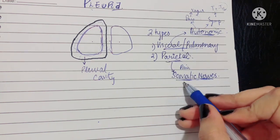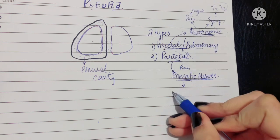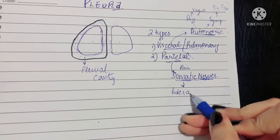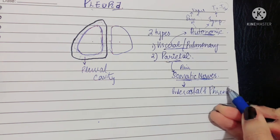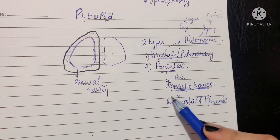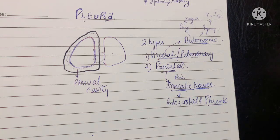The parietal layer, which is supplied by somatic nerves—now these are which somatic nerves? The intercostal nerve and the phrenic nerve. The phrenic nerve usually supplies the central part of the pleura, and the intercostal nerve supplies the peripheral part of the pleura.